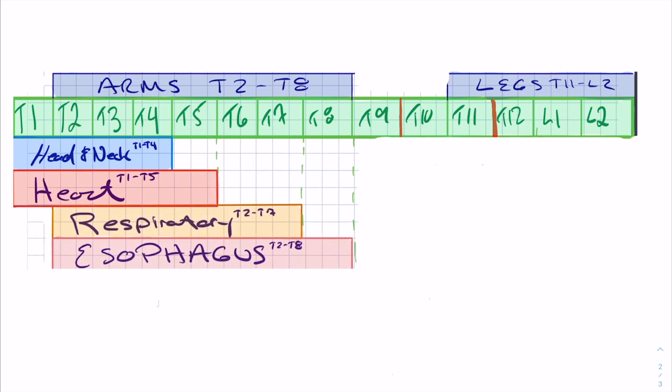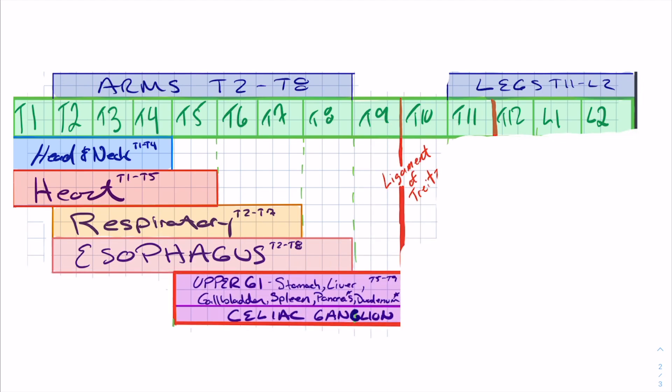Similarly, the respiratory tract is going to be somewhere in the higher portion of the thoracic region — T2 through T7. The esophagus is T2 through T8. Some of these overlap, but it'll be obvious on the questions which one is which. Now the next part is the GI system, which is one of the highest yield portions. The upper GI — stomach, liver, gallbladder, spleen, pancreas, and duodenum, everything before the ligament of Treitz — that portion separates the upper GI from the rest of the GI system.